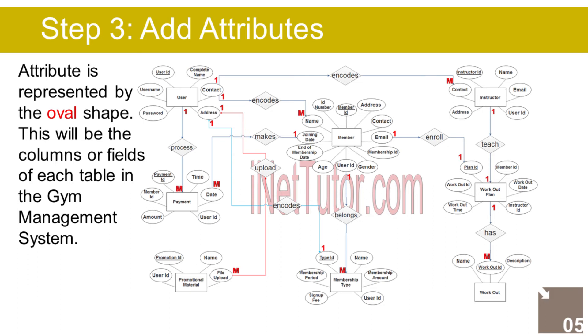The Instructor entity has the following attributes: Instructor ID (Primary Key, represented with underline), name, email, contact, address, User ID (Foreign Key).